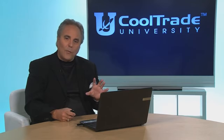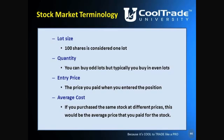Let's talk about lot size. An even lot is 100 shares. Typically when we trade and invest, we do it in even lots of 100 shares at a time. Less than that is called an odd lot. Entry price is the price you paid when you entered the trade. If you bought 100 shares at $10 and later bought 100 more at $9, there are two entry points — averaging them gives you an average cost of $9.50 per share.